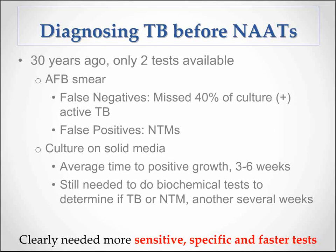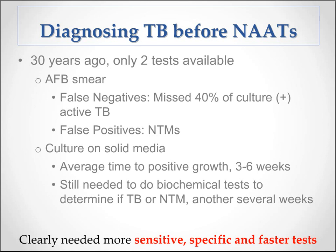Twenty years ago, there were really only two tests available for diagnosing tuberculosis. There was the acid-fast bacillus, or AFB smear, which was prone to false negatives — it missed 40% of subsequently culture-positive cases of active TB. But equally important, false positives, particularly in an area of the country where non-tuberculous mycobacteria are quite prevalent; a positive smear might actually be more likely to be an NTM rather than tuberculosis. And the gold standard was culture on solid media, with an average time to positive growth of three to six weeks, after which you still needed biochemical tests to determine if it was tuberculosis or an NTM, taking another several weeks before you had a definitive diagnosis. What was clearly needed were tests that were more sensitive, specific, and faster.